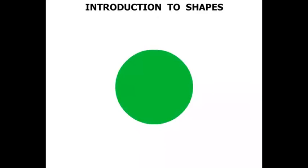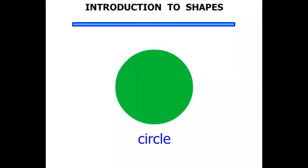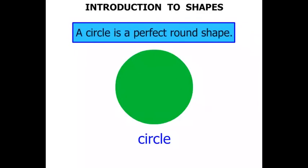What about this shape? Well this is a circle. A circle is a perfect round shape. So there we have it, a circle.